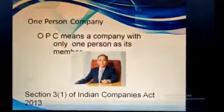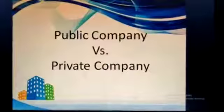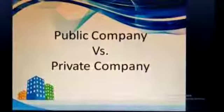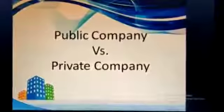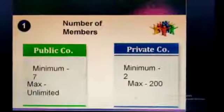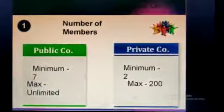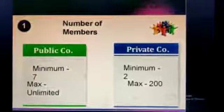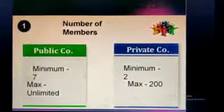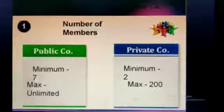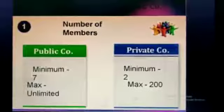So now we have discussed the three types of company: public company, private company, and one person company. Now we will discuss the difference between the public company and private company. On the basis of number of members, a public company requires a minimum of 7 members with no maximum limit, but a private company requires a minimum of 2 members and a maximum of 200.